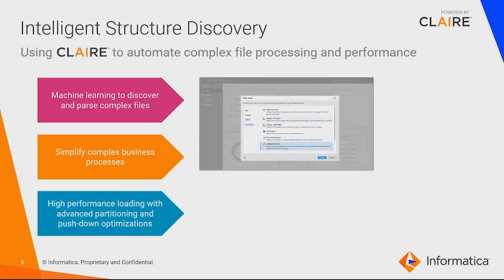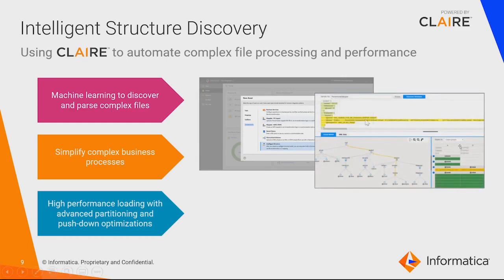Coming to the implementation — from the Informatica UI, if we need to create an Intelligent Structure Discovery component, we go to the ISM model tab. Once we hit this tab, a new window will open. We need to provide the sample data file. The moment the discovery phase starts, it will generate a visual model from the sample data at the end.